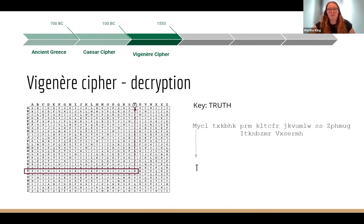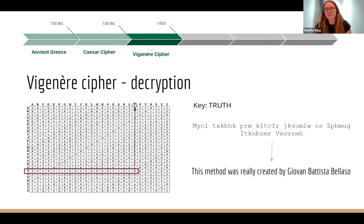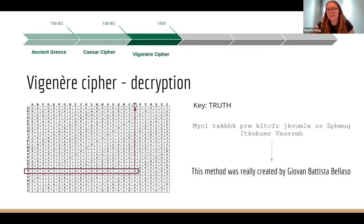To decrypt we also use the Vigenère cipher square. If we know the key — in this case 'truth' — we take the first letter of the key, T, find the corresponding cipher text character M, and look up the plain text character, which is T. This method was really created by Giovanni Battista Bellaso, and in the 19th century it was wrongly attributed to Vigenère, which is how it got its name.